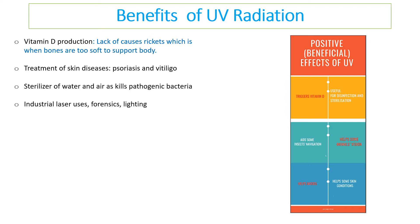However, there are benefits of UV radiation. A lack of UV results in a lack of vitamin D, which can cause a deficiency disease called rickets, where bones become too soft to support the body. UV is used in treatments of skin diseases such as psoriasis. Sterilization of water — a lot of sewage and drinking water is treated by shining UV on it, killing bacteria, meaning less chlorine needs to be added. UV is also used in industrial lasers, forensics, and lighting.